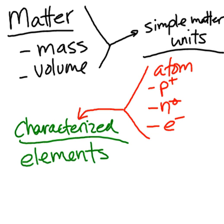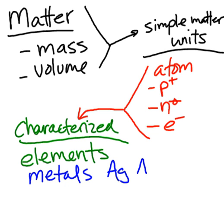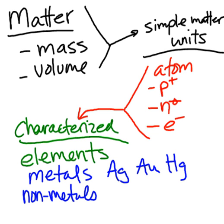Elements include metals such as silver, gold, and even mercury, which is a liquid at room temperature. There are also non-metals, which include carbon, hydrogen, and oxygen. Those three elements in the right proportions make glucose — sugar — which is vital for our survival.